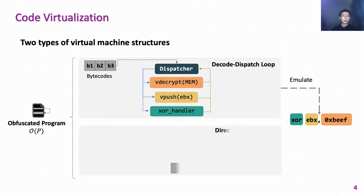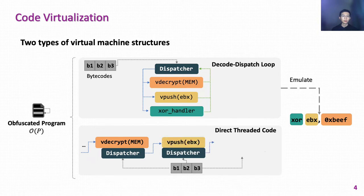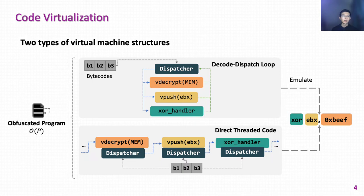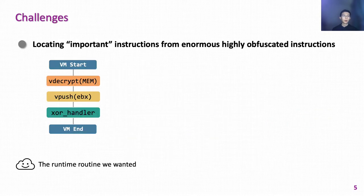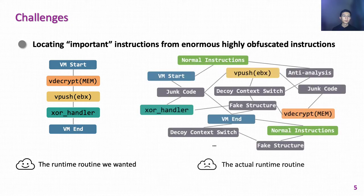Therefore, advanced commercial obfuscators adopt another VM structure: direct threaded code. In this structure, the central dispatcher doesn't exist, and each virtual handler can jump directly to the next one. To defeat virtualized malware, the first challenge is locating important virtualized instructions from enormous highly obfuscated instructions. The analysts only need the important virtual handlers between VM start and VM end, but sophisticated obfuscators integrate multiple obfuscation schemes to protect virtual components.